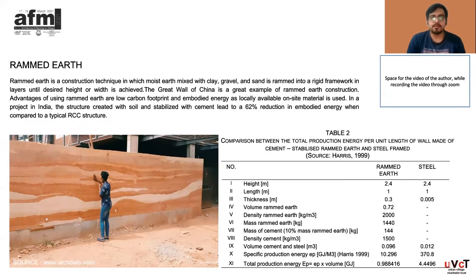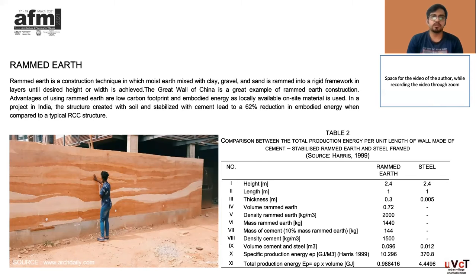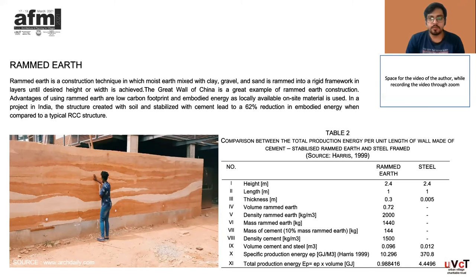Rammed earth is a construction technique in which moist earth mixed with clay, gravel, and sand is rammed into a rigid framework in layers until the desired height or width is achieved. The Great Wall of China is a great example of rammed earth construction. Advantages include low carbon footprint and embodied energy, as locally available on-site material is used. In a project in India, a structure created with soil stabilized with cement led to a 62% reduction in embodied energy when compared to a typical RCC structure. Table 2 gives a comparison between total production energy per unit length of wall made of cement-stabilized rammed earth versus steel reinforcement.